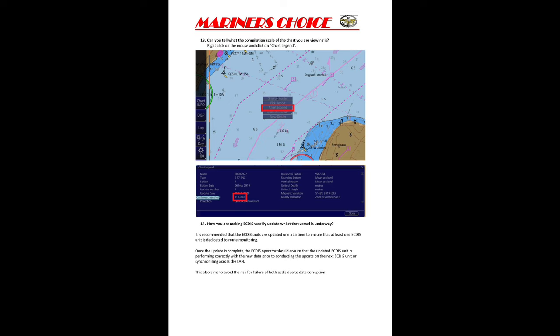Can you tell the compilation scale of the chart you are viewing? Simply right-click — four menu options will open: Ship on Center, Pick Up, Report, and Chart Legend. Click on Chart Legend and a small pop-up screen will open on your ECDIS where you can see the compilation scale.